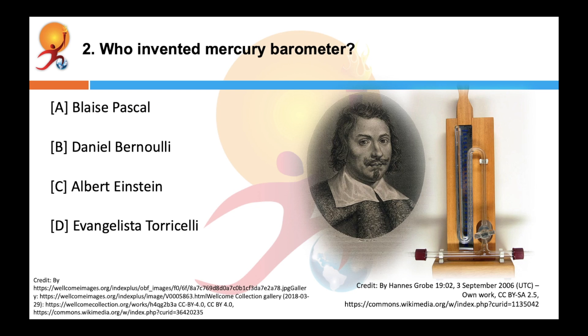Who invented mercury barometer? Correct answer is D. Evangelista Torricelli devised for the first time a method for measuring atmospheric pressure. A long glass tube enclosed at one end and filled with mercury is inverted into a trough of mercury. This device is known as mercury barometer.